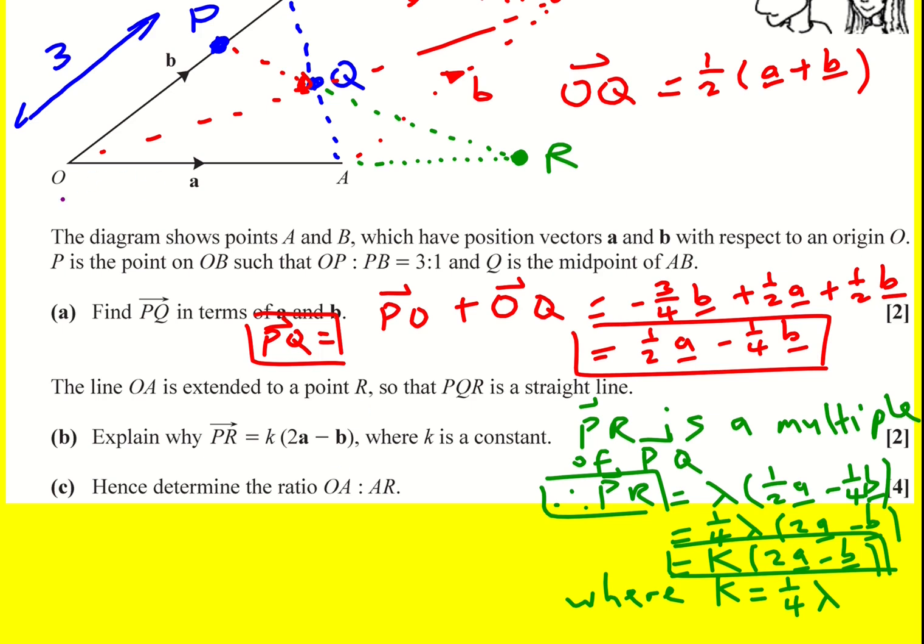Hence determine the ratio OA to AR. So we have that OA, the vector is a, so if we can work out AR in terms of that, we're there. One thing we can do is find out OR as a vector, and then we can get AR and we're sorted.